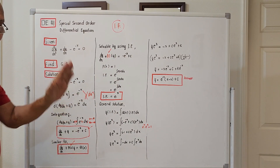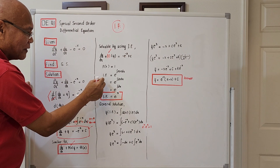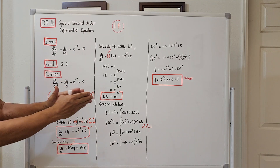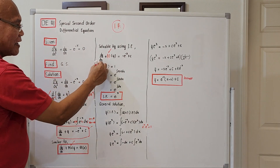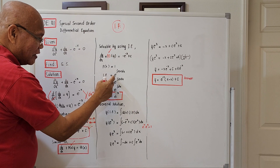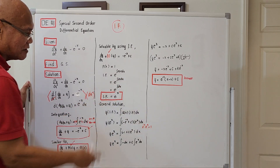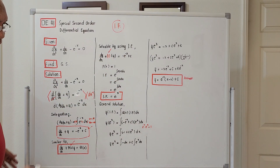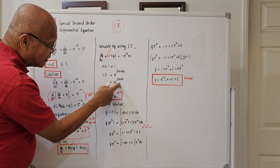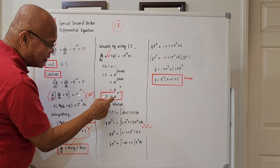The formula for the integrating factor is: Integrating Factor = e raised to the integral of P(x) dx. Substituting P(x) = 1: Integrating Factor = e raised to the integral of 1·dx = e raised to x. The integral sign and differential sign cancel, so the computed value of the integrating factor is e to the x.